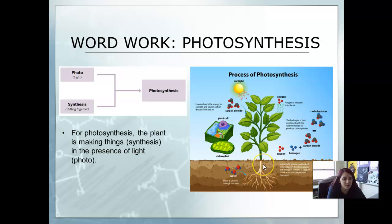The leaf cells have special parts called chloroplasts and inside them the energy of the sunlight is used to break apart the oxygen and hydrogen. This then releases oxygen in the air for us to breathe.